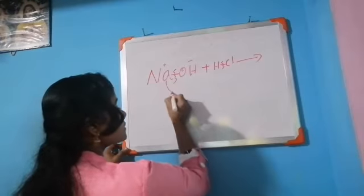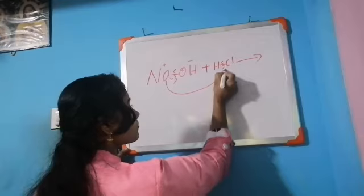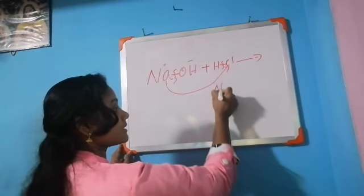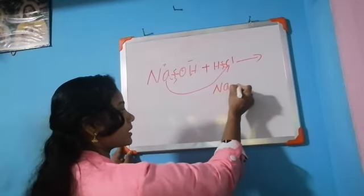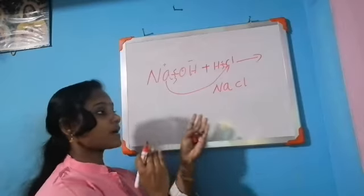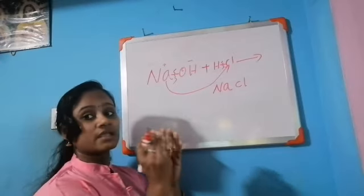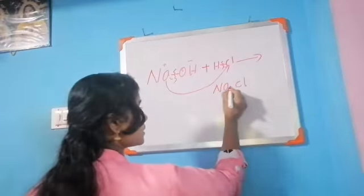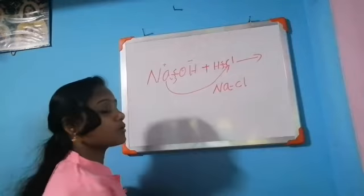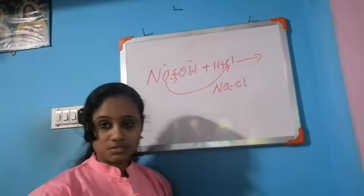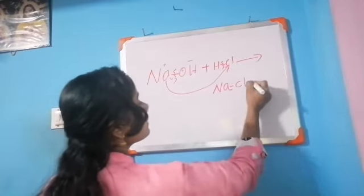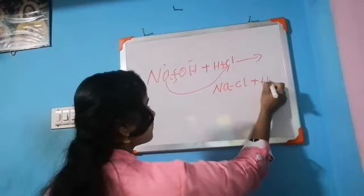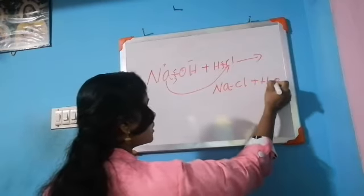Sodium combines with chlorine to form sodium chloride, and a new bond is formed between sodium and chlorine. Hydrogen and OH combine to form a water molecule.